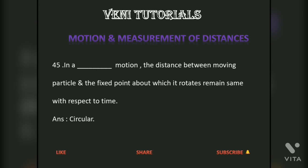In circular motion, the distance between a moving particle and the fixed point about which it rotates remains the same with respect to time.